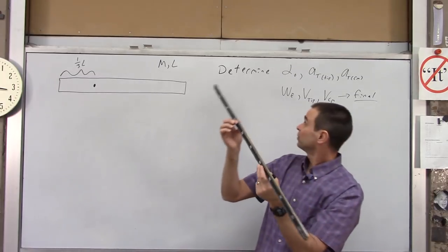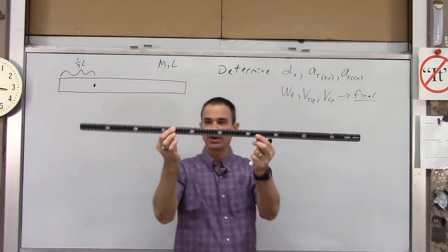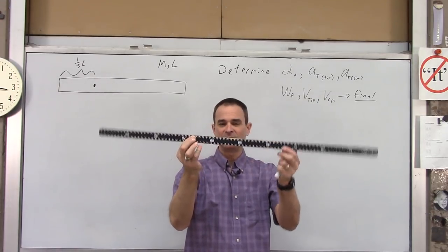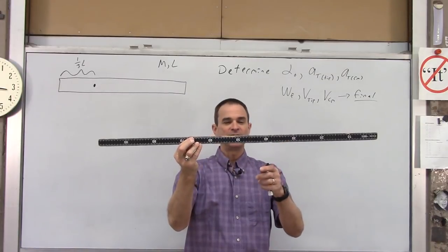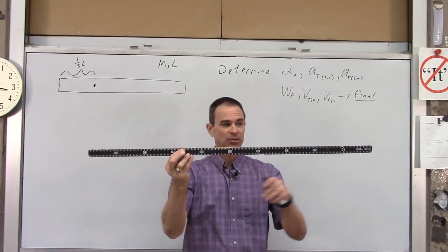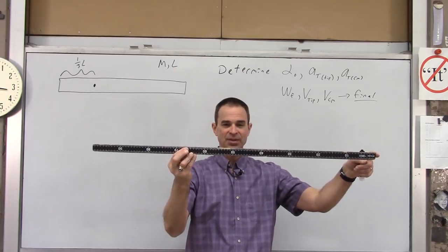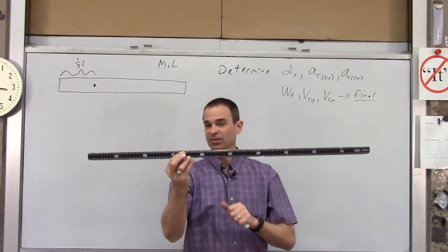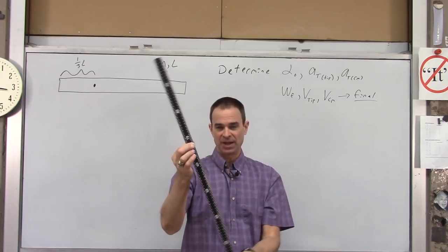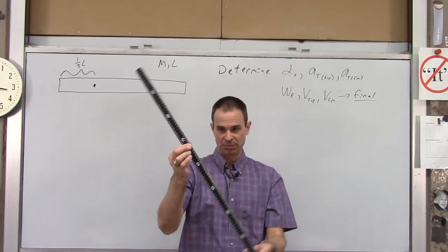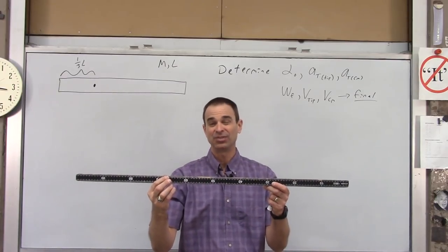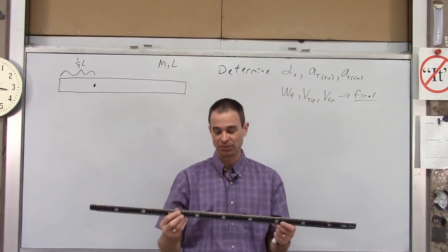The first three questions kind of go together. At the moment of release, what is the angular acceleration of the rod, what is the tangential acceleration of the tip of the rod, and also of the center of mass? All parts of the rod have the same angular acceleration because they're all stuck together, but different parts will have different tangential accelerations.